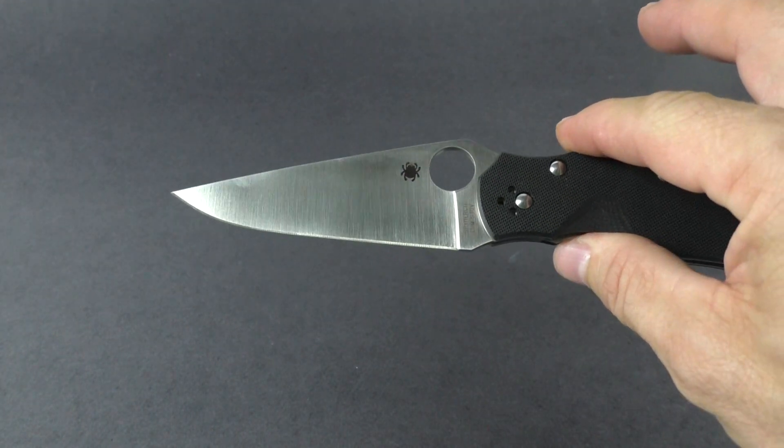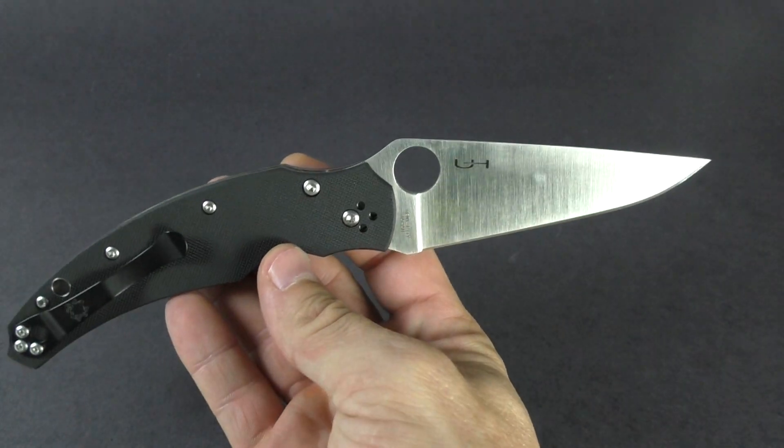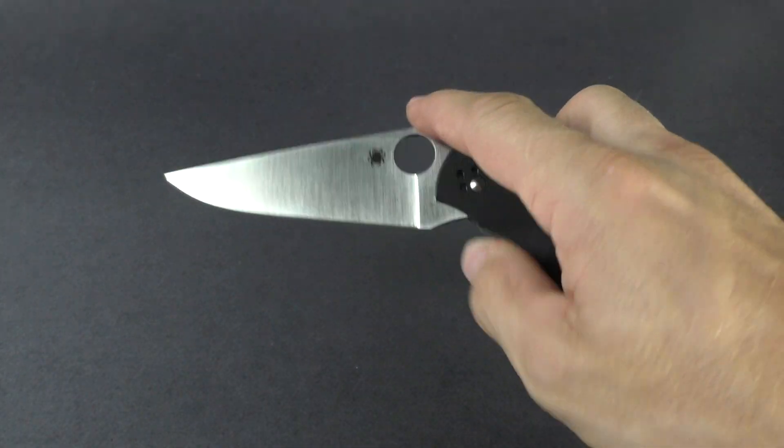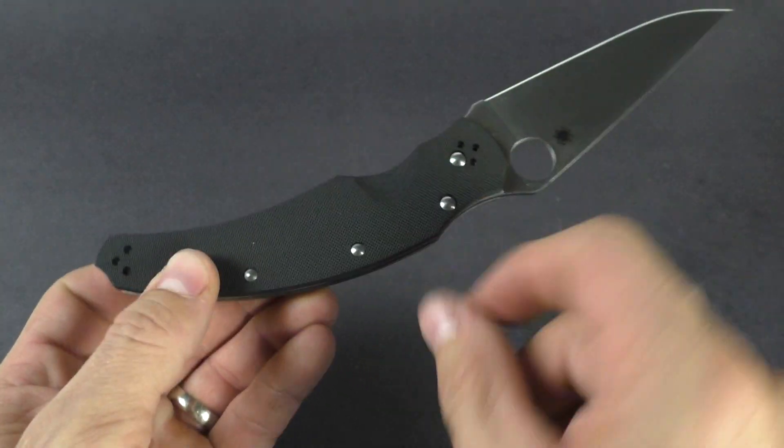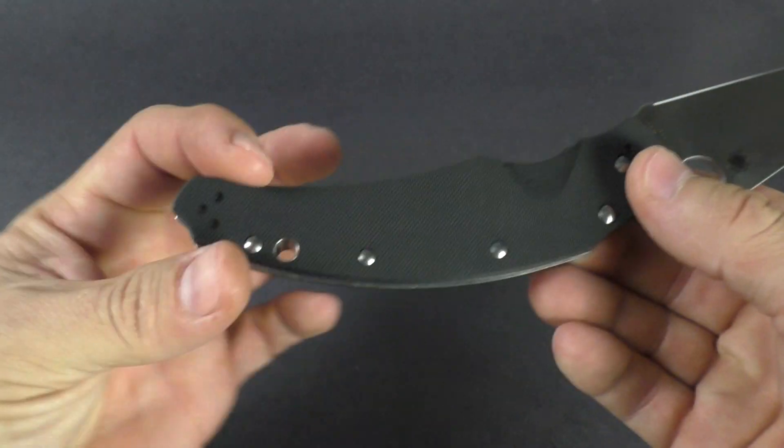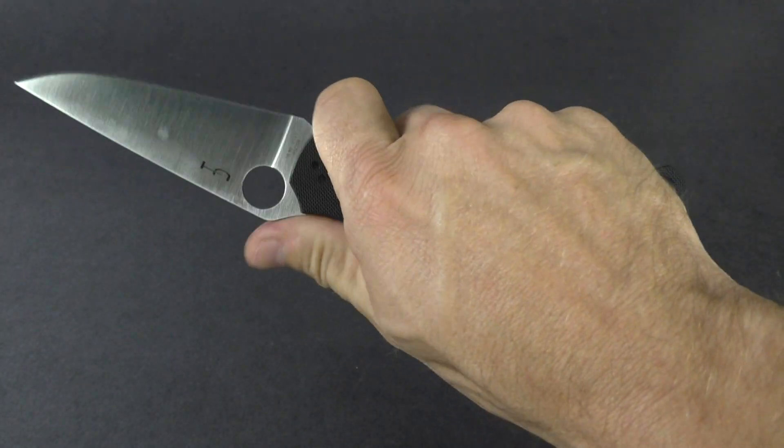He does a lot of stuff for Kaiser, the T1, and others that have been pretty popular knives. Kind of a unique looking knife, fatter up through here and then nice and thin here. Really grips the hand though.